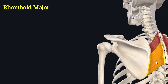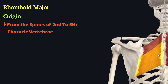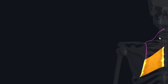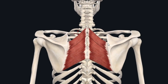The rhomboid major originates from the spines of the second to fifth thoracic vertebrae. Its fibers also travel inferolaterally to insert on the medial border of the scapula inferior to the spine of the scapula, down as far as the inferior angle of the scapula. Both rhomboid muscles are supplied by the dorsal scapular nerve, originating from the C4 and C5 cervical nerve roots.